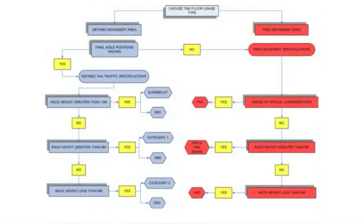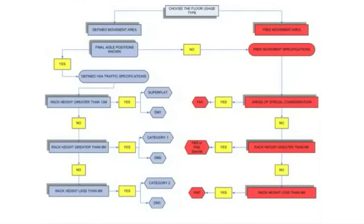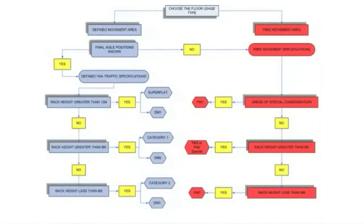Depending on your rack height you pick one or other specification. In TR34 fourth edition 2014, you won't find the word 'superflat' anymore — you'll find DM (Defined Movement). DM1 is the equivalent of European standard EN 15620, which is what truck manufacturers specify for their equipment. Between 8 and 13 meters rack height you get DM2; under 8 meters is DM3.